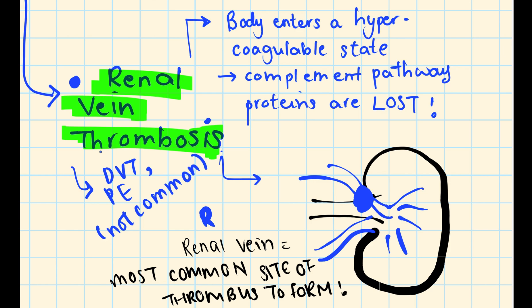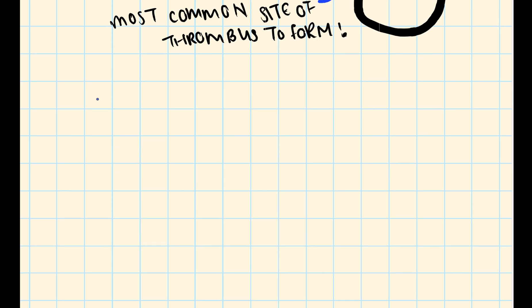With renal vein thrombosis, it typically presents with loin or back pain — kidney pain often presents as back pain — along with hematuria and fluctuating renal function, meaning kidney function goes up and down.